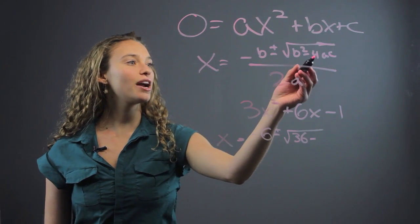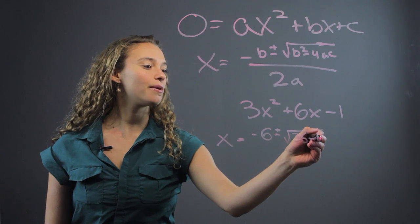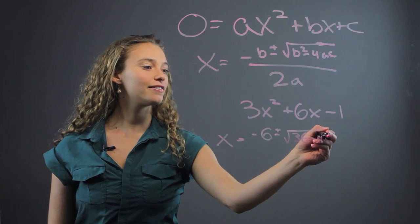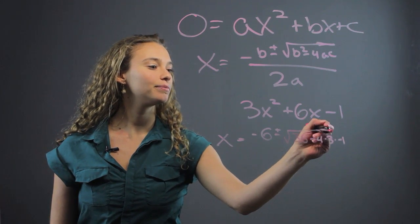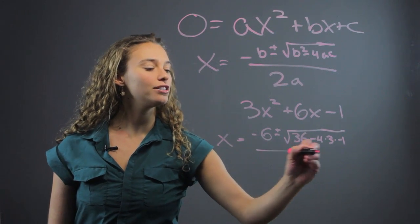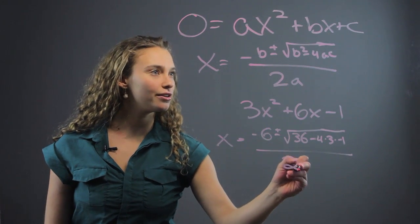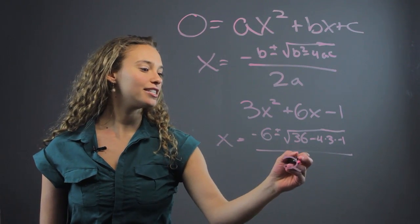minus 4ac. So, that's going to be 4 times a, which is 3, times c, which is negative 1. Right? All divided by 2 times a, which is 3.